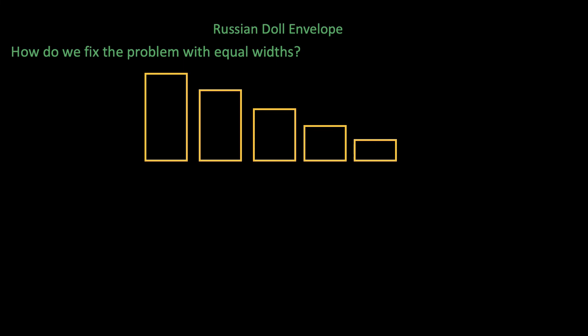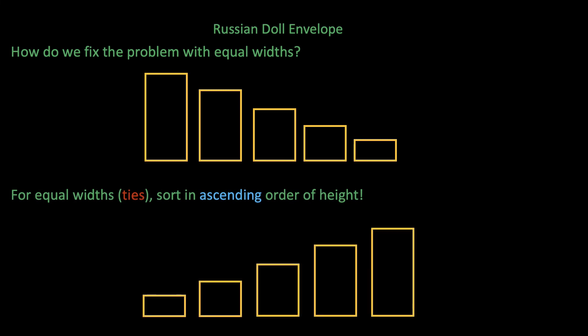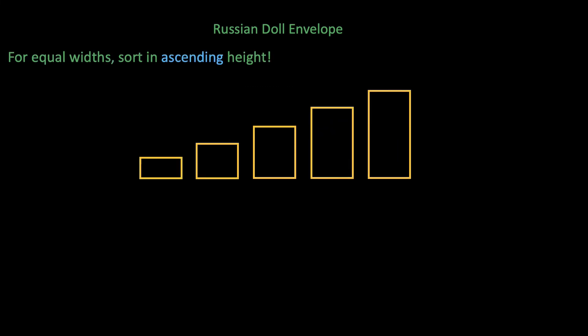I'm sure if you spend enough time, you can come up with this trick. For envelopes with the same width, simply do a secondary sort on the height in ascending order. Why does this work? Because if the longest decreasing subsequence algorithm chooses one of the envelopes, then all the envelopes after it with the same width will have monotonically increasing heights. So the longest decreasing subsequence algorithm can choose at most one envelope from each group of envelopes with the same width.